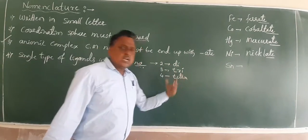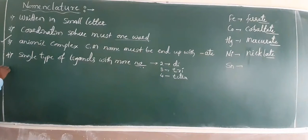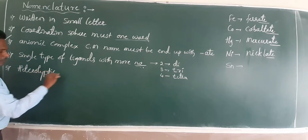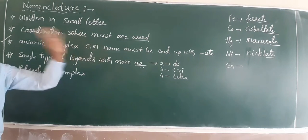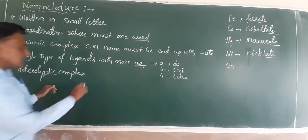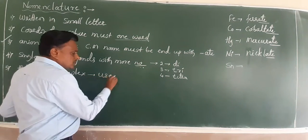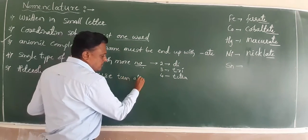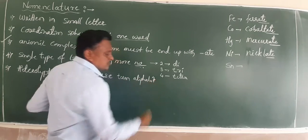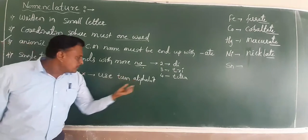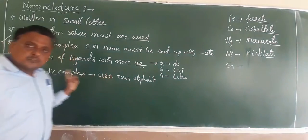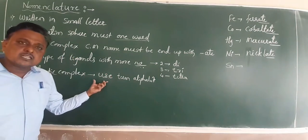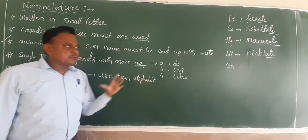When involving more than one type of ligand — a heteroleptic complex — the ligands are arranged alphabetically. You arrange the ligands based on the alphabet: A, B, C. This is very important for heteroleptic complexes.